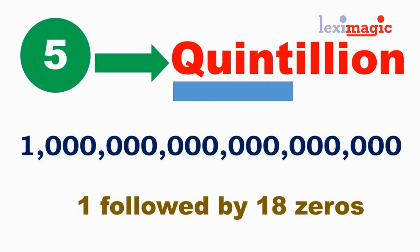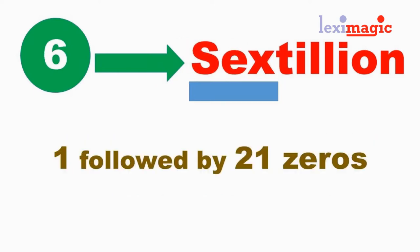We follow this pattern in quintillion, which has the root 'quint' for five and has 18 zeros. The sextillion has the root six and the number is one followed by 21 zeros — that is six times three, 18 plus three, equals 21.